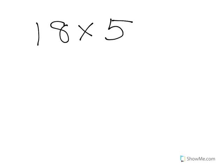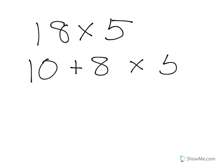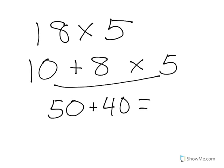Another way we can do that is to break the number into its expanded form and multiply that way. So I have 18 times 5. I'm going to rewrite that in expanded form: 10 plus 8, times 5. Then 5 times 10 gives me 50, and 5 times 8 gives me 40. Add those together and 18 times 5 gives me 90.